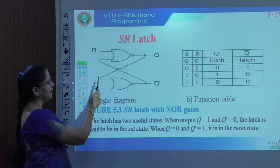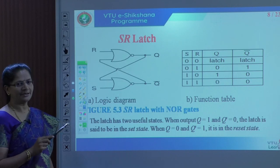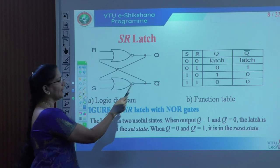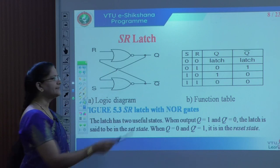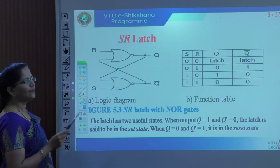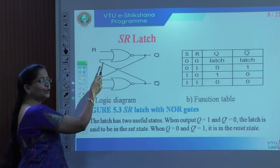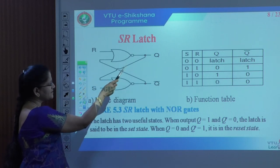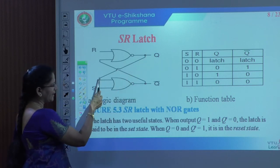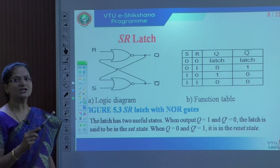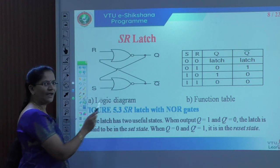Here we have the logic diagram of the SR latch. Why we call it SR latch — it is the set and reset form. The function table has two inputs, S and R, with outputs Q and Q-bar. It is constructed with two NOR gates in cross-coupled configuration. One input is R, another input is S, and the output is fed back as an input — that is why we call it a sequential circuit. The complement output is connected as input for the other NOR gate.